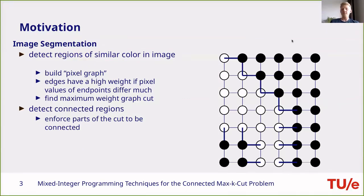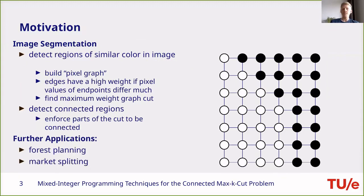In image segmentation, we are interested in connected principal components, because a disconnected component might be something completely unrelated to another part of the picture. This is where connectivity enters the game. Taking connectivity into account, our partition will consist of a big black part and a big white part. Other applications include forest planning and market splitting.